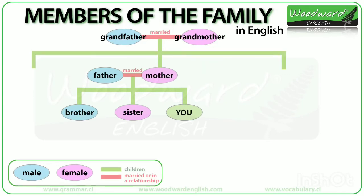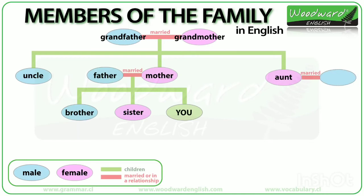Sometimes your mother or father have brothers and sisters. If your mother has a brother, he is your uncle. If your mother has a sister, she is your aunt — 'aunt' is British English pronunciation, 'aunt' is American English. If your aunt is married to a man, he is also your uncle.